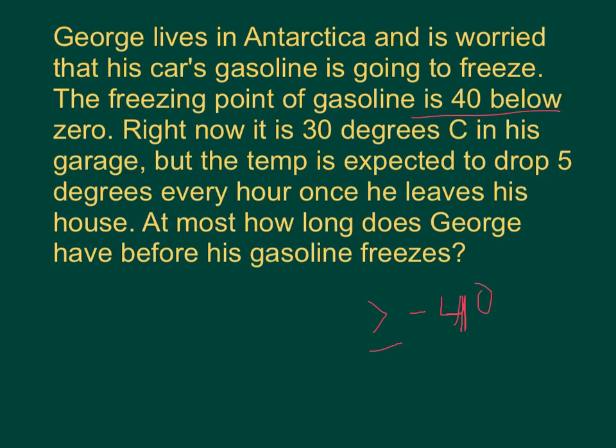He doesn't want it less than negative 40. He wants it greater than or equal to negative 40. So, it's right now 30 degrees Celsius, but the temperature is going to drop 5 degrees every hour. So, it's going to start out at 30, but it's going to drop 5 degrees every hour, and we're asking for how long in hours, how much time, right? So, if it's 5 degrees every hour, then 5 times the number of hours is how fast it's going to drop.